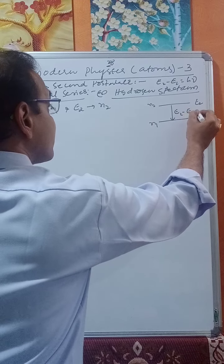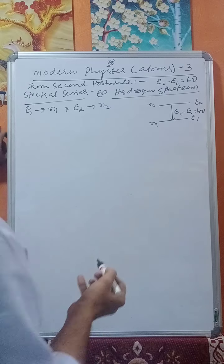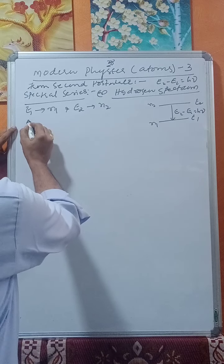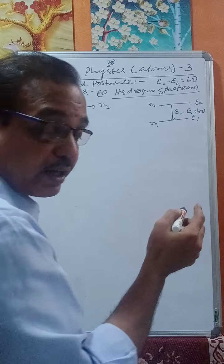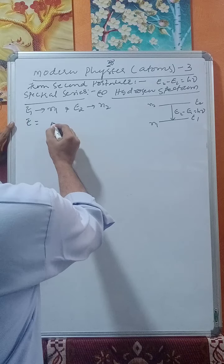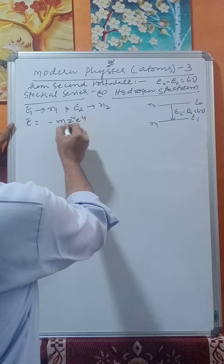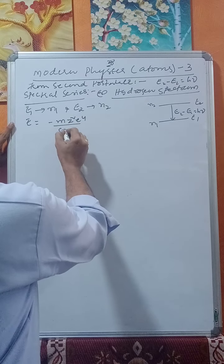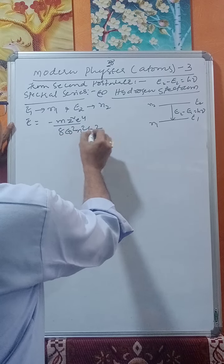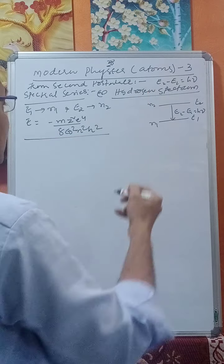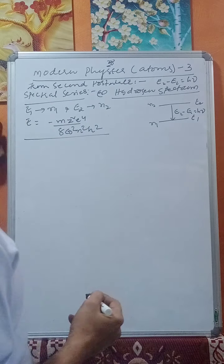The electron will transition from the higher energy level to the lower energy level, and E2 minus E1 equals h·ν. We have derived that energy E equals minus of m·z²·e⁴ divided by 8·ε₀²·n²·h².